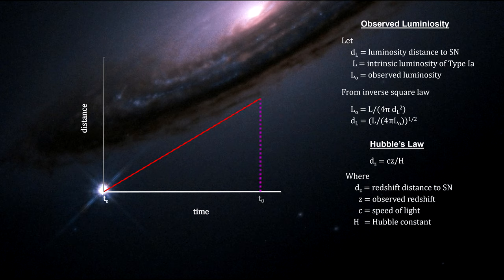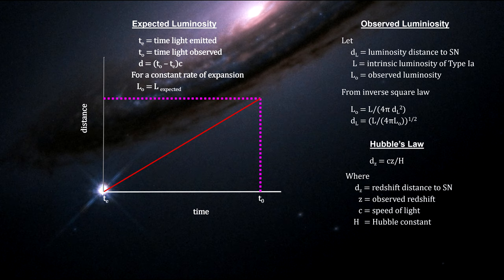If the expansion rate is constant, the luminosity distance and the redshift distance will be the same.